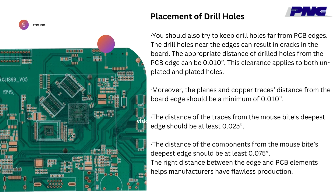You should also try to keep drill holes far from PCB edges, as drill holes near the edges can result in cracks in the board. The appropriate distance of drilled holes from the PCB edge can be 0.010. This clearance applies to both un-plated and plated holes. Moreover, the planes and copper traces' distance from the board edge should be a minimum of 0.010. The distance of traces from the mousebite's deepest edge should be at least 0.025, and the distance of components from the mousebite's deepest edge should be at least 0.075. The right distance between the edge and PCB elements helps manufacturers have flawless production.